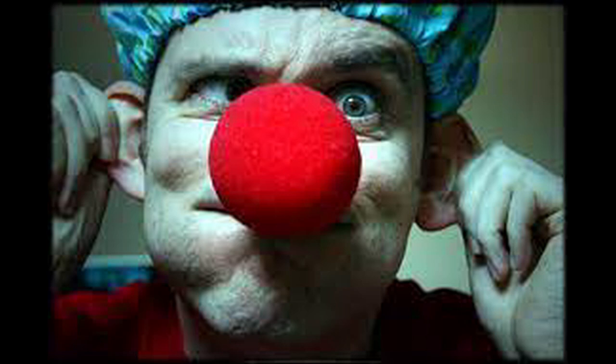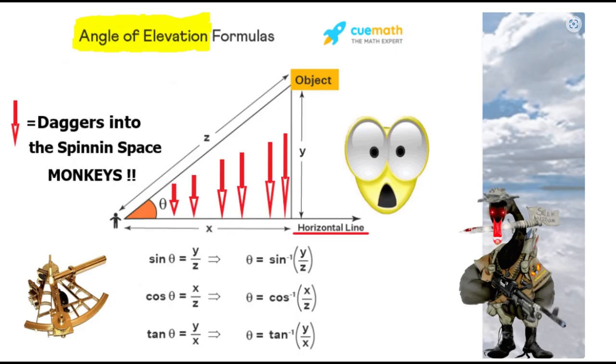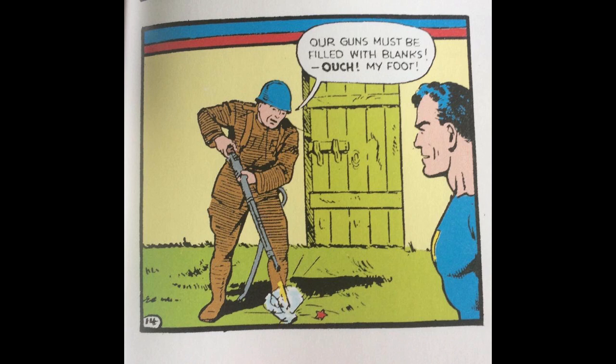He adds what he himself calls daggers into the spinning space monkeys. He publishes a right triangle and the trigonometric formulas how to calculate the angles and sides of that triangle. And he doesn't even realize that he most definitely shot himself in the foot there.